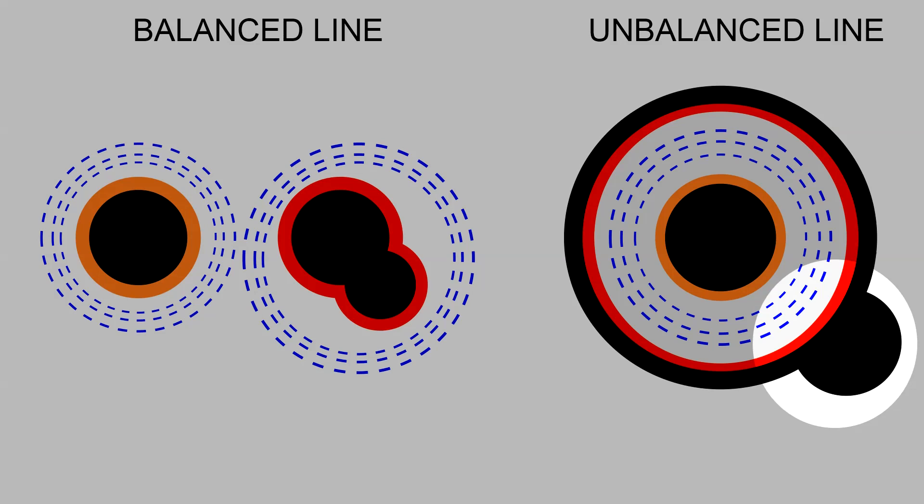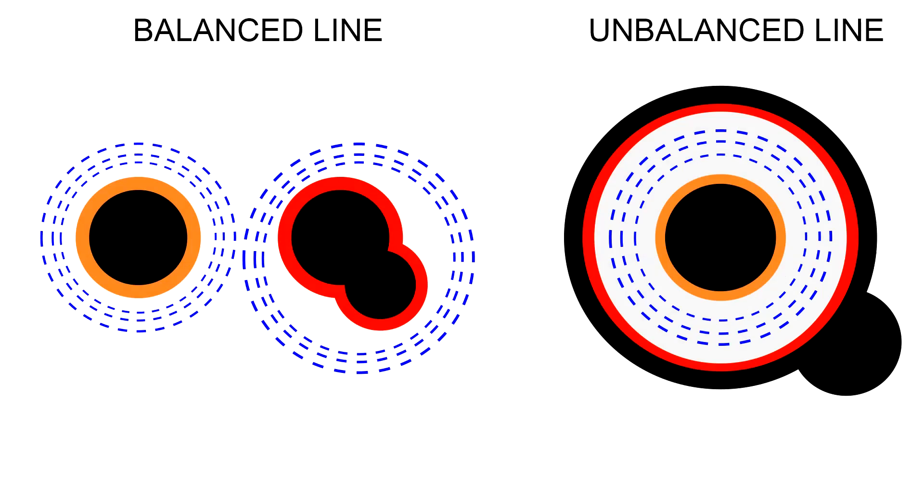Instead, if we attach something externally to a coaxial line, we see a completely different behavior. Being the current on the inner surface, nothing connected to the outside can disrupt its symmetry. This is why if I hold with my hands a balanced line, I see an impedance change. While if I hold the coaxial cable, nothing happens.